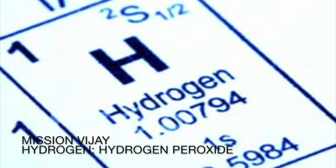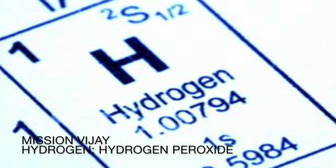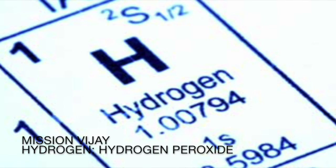For storage, hydrogen peroxide is not kept in glass bottles since alkali metals present in glass act as catalysts causing decomposition. It is stored in colored or wax-coated glass, plastic, or Teflon bottles. Small amounts of acid, glycerol, alcohol, acid electrolytes, and H₃PO₄ are often used as stabilizers to check decomposition.